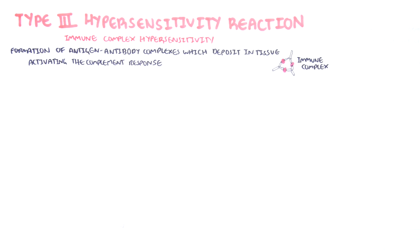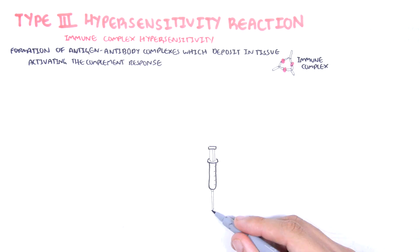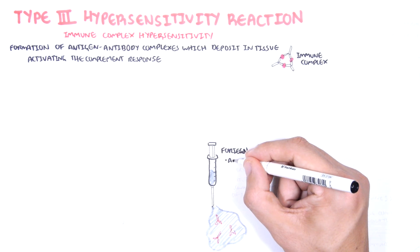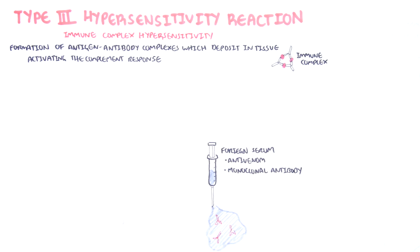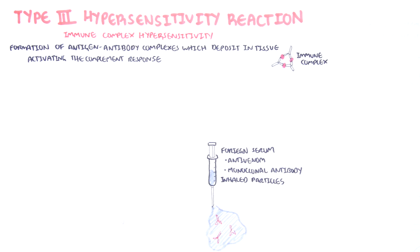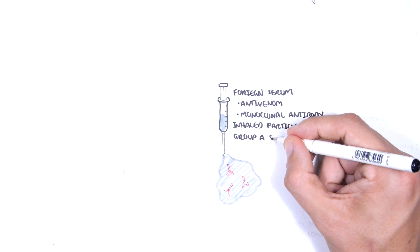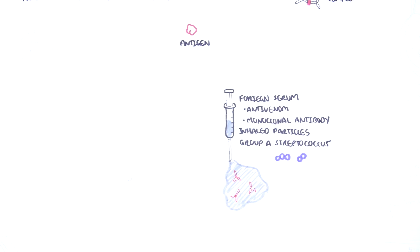External antigens that can form immune complexes when antibodies are formed against them include foreign serum such as anti-venom injections, monoclonal antibodies given for treatment, inhaled particles from the work environment, and bacteria such as group A streptococcus. For antibodies to target these antigens, the body first has to be exposed to them.